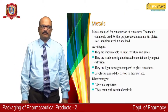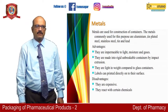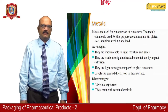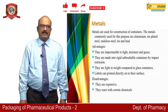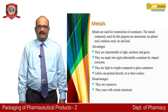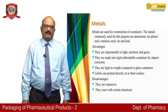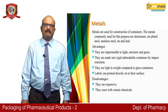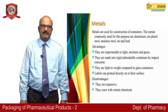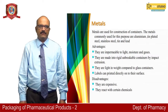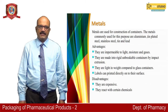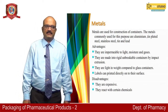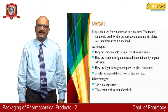The next category is metals. Metals are used for the construction of containers. The metals commonly used for this purpose are aluminium, tin, plated steel, stainless steel, and lead. The advantages of using metals are that they are impermeable to light, moisture and gases. They are made into rigid unbreakable containers by impact extrusion, and are light in weight compared to glass containers. Labels can be printed directly onto the surface. Disadvantages include being expensive and reacting with certain chemicals.